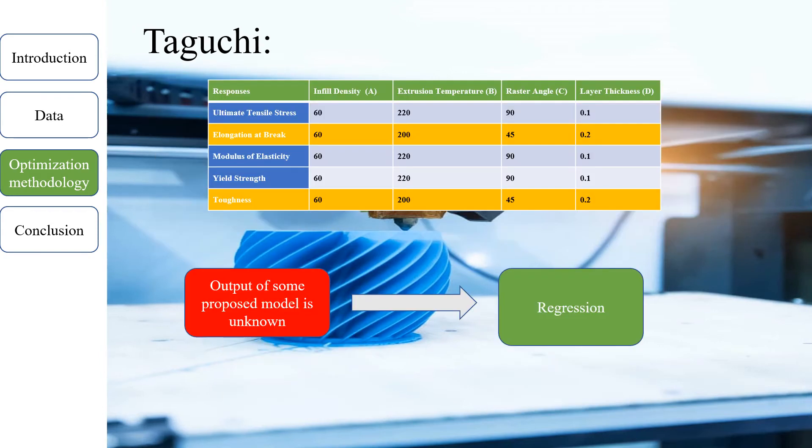In this slide, you will see the Taguchi method best levels of factors. The best level of factors for each mechanical property is summarized in the first table. The result describes that 60 percent infill density is the best level of infill density parameter. But there is no unique printing configuration that optimizes all of the mechanical properties altogether.